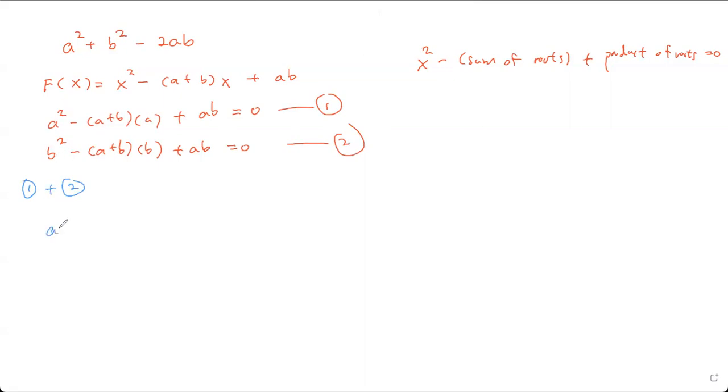If I add that together, I'm going to get a squared plus b squared. And then this plus this would be negative of (a plus b) times (a plus b) plus ab plus ab would give us 2ab. And that equals zero.